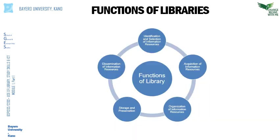Have you understood the objectives of a library? Just like the objectives of libraries, libraries also have functions. Libraries are established to perform certain functions irrespective of the type of library and the kind of users they serve. The functions of libraries run from identification and selection all the way to dissemination of information. Identification and selection is a very important function, which implies that libraries are expected to identify and select the type of information resources directly in line with the information needs of their users.